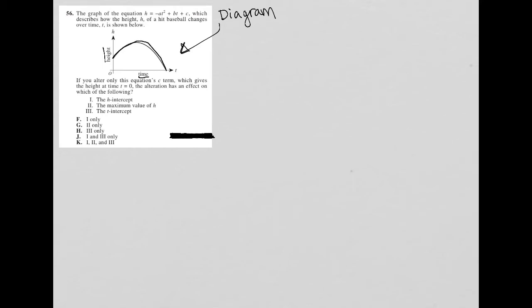So let's look at the actual question. The question says the graph of the equation h equals... and I just like to rewrite anytime I have an equation. So h equals negative at squared.